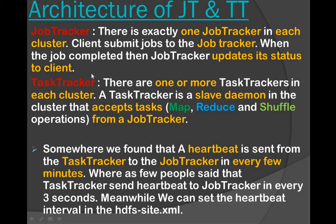There are more than one task tracker in each cluster. The task tracker is a slave service — task tracker and data node are both slave services in the cluster. The task tracker accepts tasks from the job tracker and completes them using map reduce and shuffle operations.